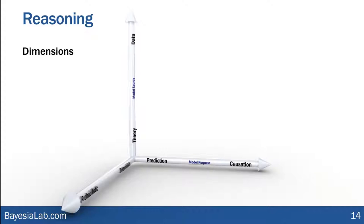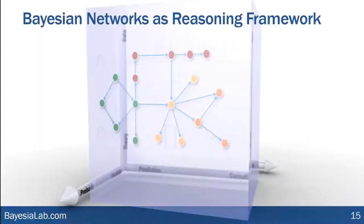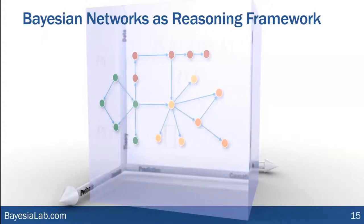You will not be surprised that we propose to use Bayesian networks — that's what our business is all about. Bayesian networks can indeed cover this entire spectrum. They are very convenient as a modeling framework because we can build them from theory, we can machine-learn them from data, we can use them for prediction, we can perform causal inference with them, and we can deal with probabilistic problems as well as deterministic domains. So really, they're quite universal.